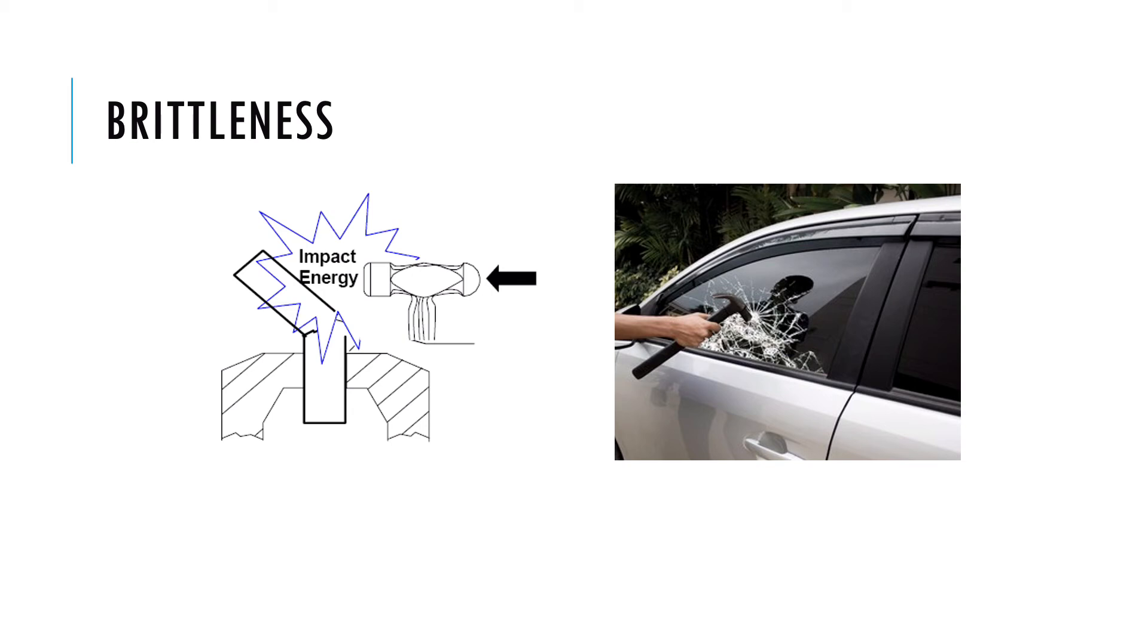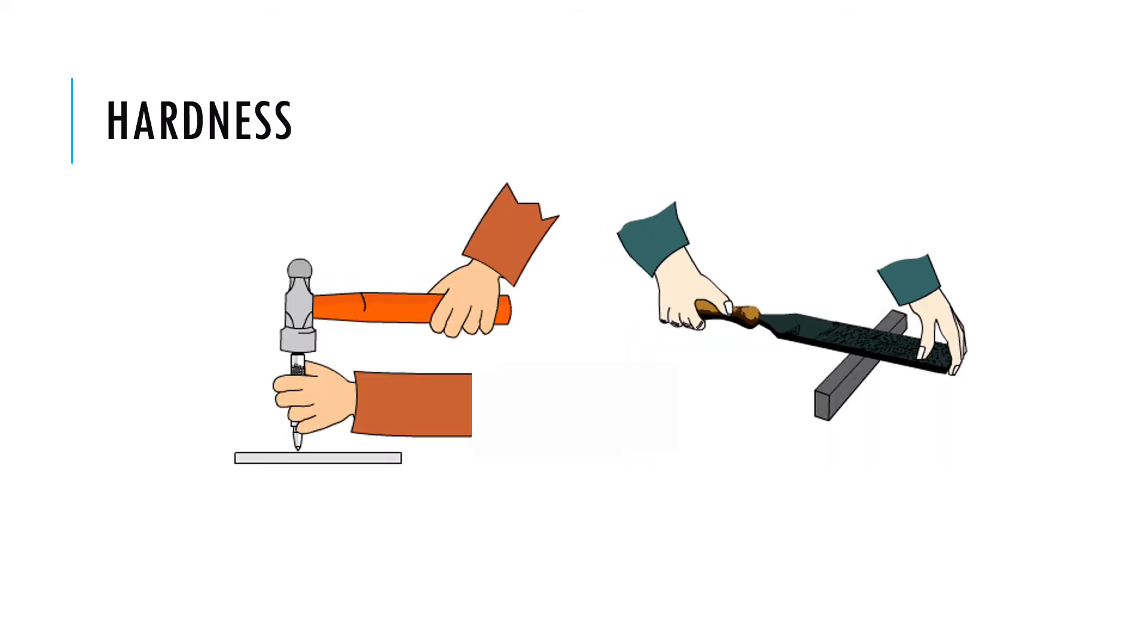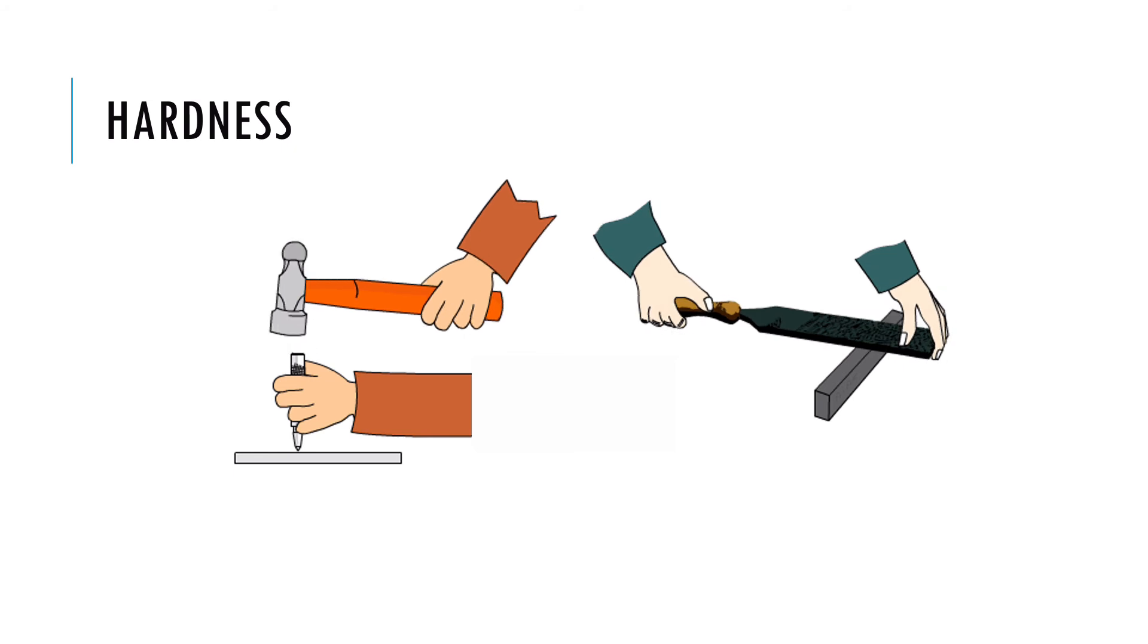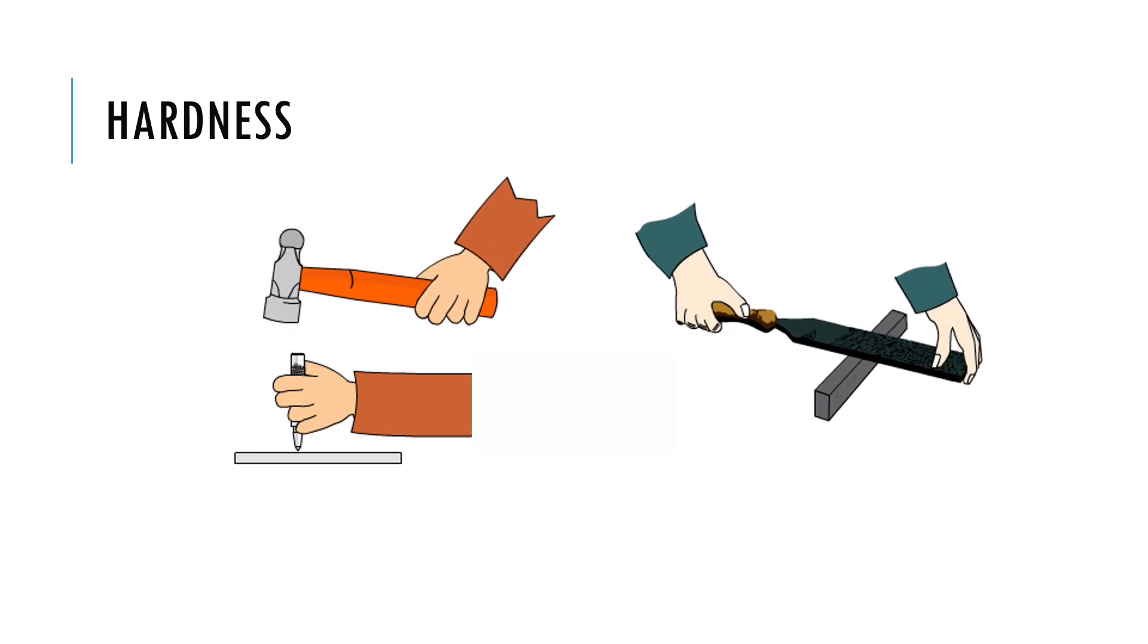Cast iron and glass are good examples of brittle material. Hardness is the ability of a material to resist scratches, wear and indentation.